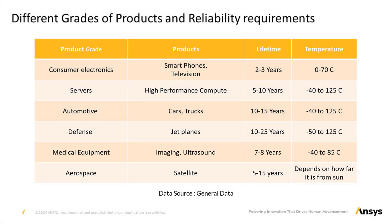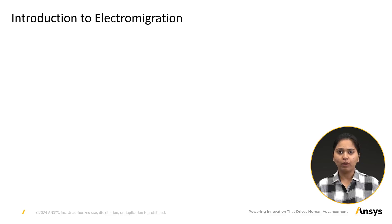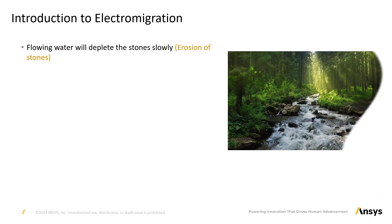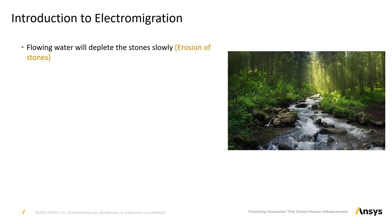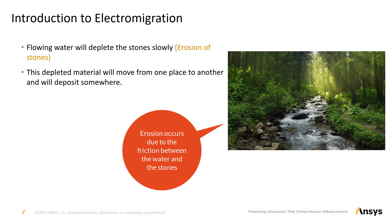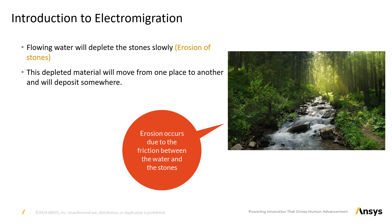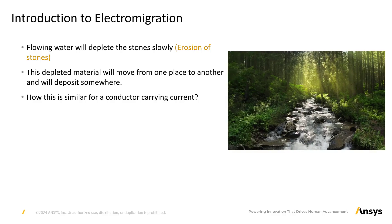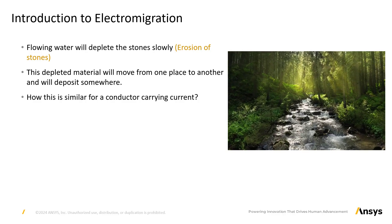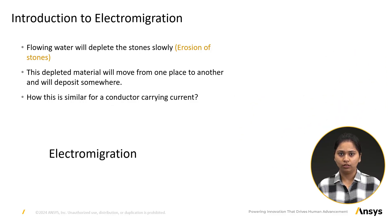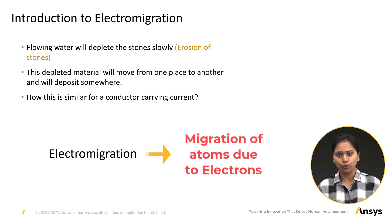Now let's delve into the main concept of chip reliability, which is electro-migration. Electro-migration can be understood with a simple example. When water flows over stones over a period, it slowly erodes the stone and carries the material along, due to the friction between the water and the stones. Similarly, when electrons flow through a conductor, they collide with the atoms of the conductor, causing them to move from one place to another. This process is known as electro-migration, which signifies the migration of atoms due to electrons.